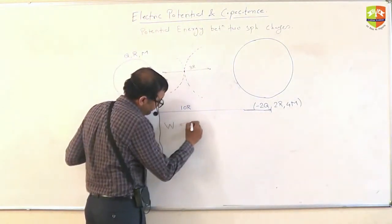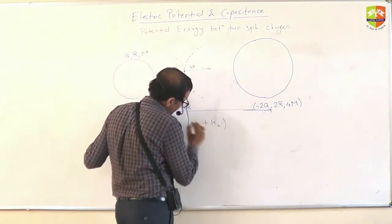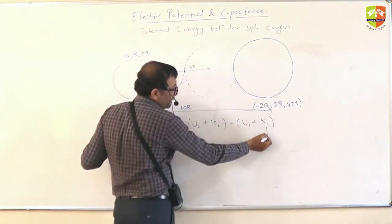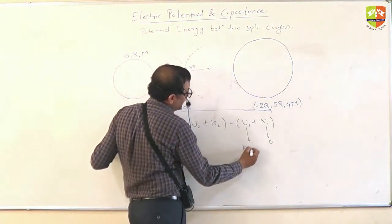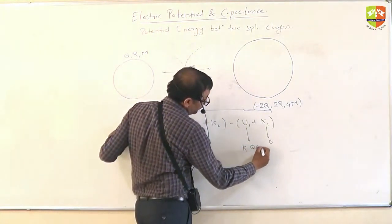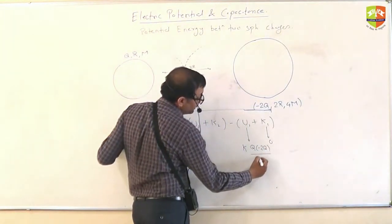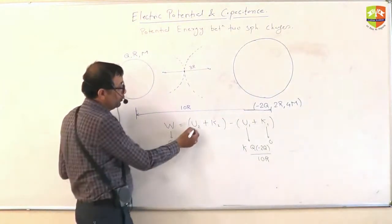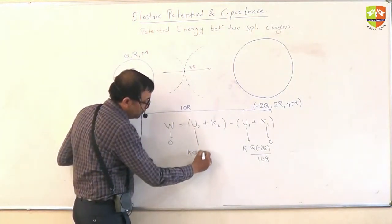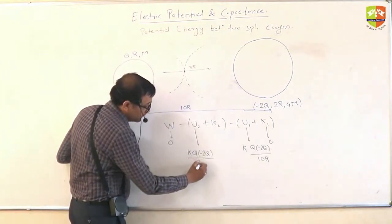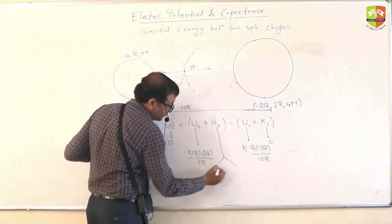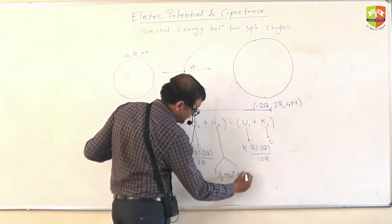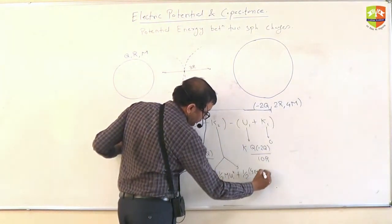The equation we are trying to use is: W equals U2 plus K2 minus U1 plus K1. W is zero, K1 is zero. U1 is K times Q times minus 2Q divided by 10R. U2 is K times Q times minus 2Q divided by 3R. K2 is one-half M·U1² plus one-half 4M·U2².